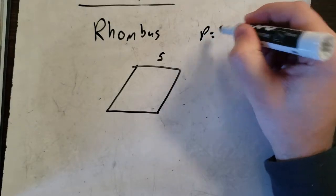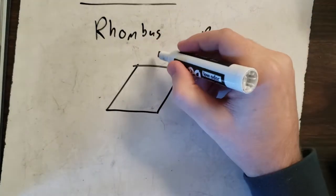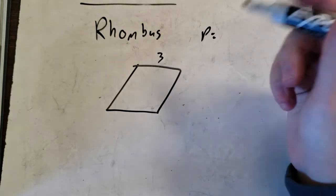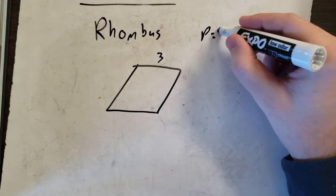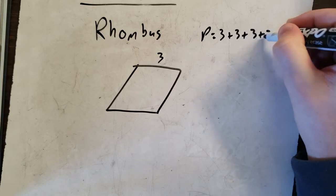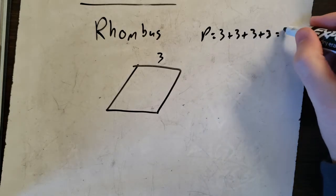Perimeter, once again, add all the sides. Let's say our side is three. It's four threes. So three plus three plus three plus three equals twelve.